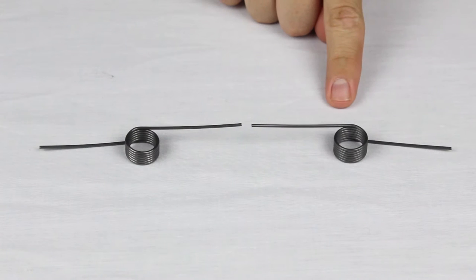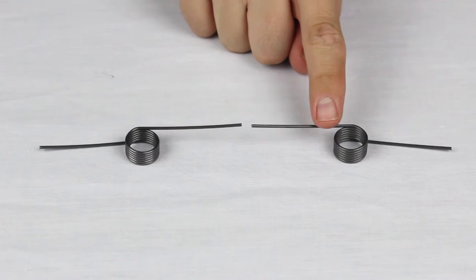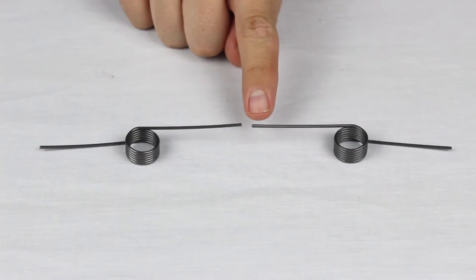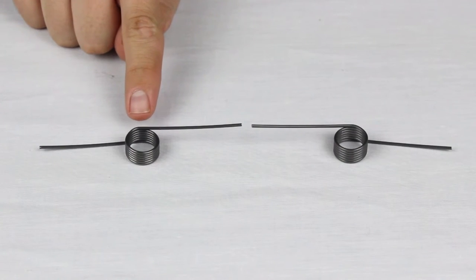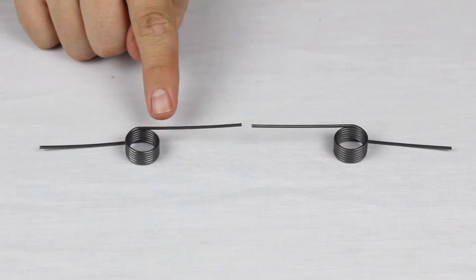This is a right-hand spring. Notice the counterclockwise path my finger is following. This other spring is a left-hand spring. Notice the clockwise rotation my finger is following.